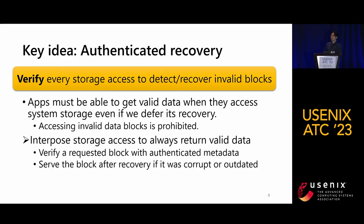Second, while performing this progressive or on-demand recovery, we must ensure that the data served to applications is the expected, correct data. To ensure this, we verify every storage access to detect any data block containing invalid content. Whenever we find an invalid data block, we recover it first before serving it to the application. In other words, we aim to ensure that applications always get valid data when they access system storage, no matter whether recovery was deferred. To realize this, we interpose every storage access — whenever an application requests a data block, we verify its content with authenticated metadata, and if corrupted or outdated, we return the block only after recovery.